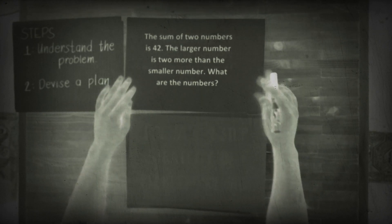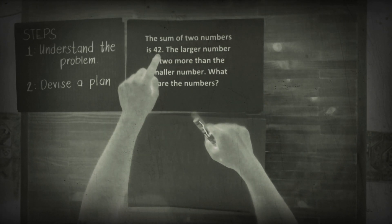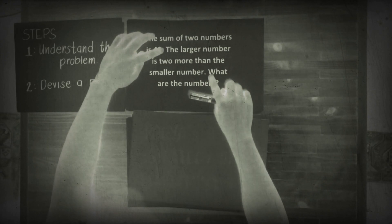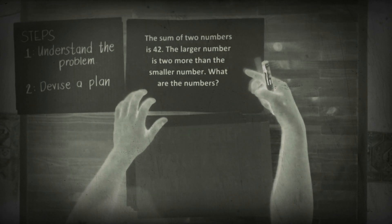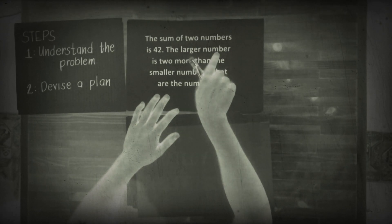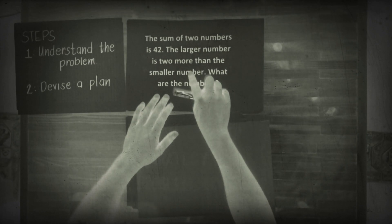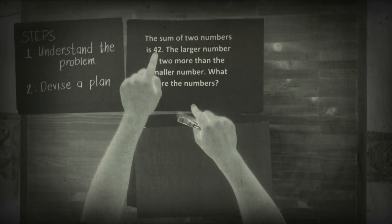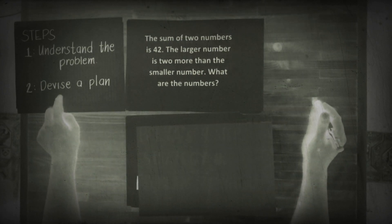Step one, let's try to understand the problem. The sum of two numbers is 42. The larger number is two more than the smaller number. The two numbers have a restriction, there's a qualification. You have to translate 'is two more than' into mathematical sentence. What is being asked is what are the numbers that when added equals 42, wherein one number is two more than the other number.